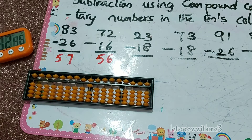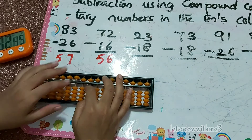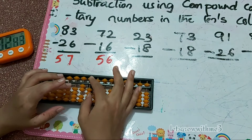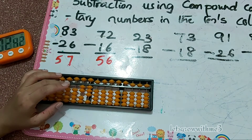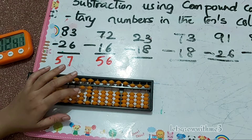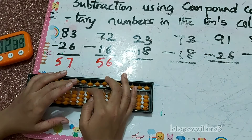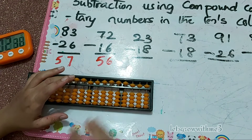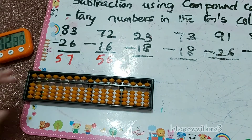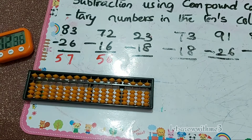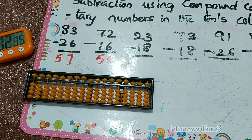Next: 23 minus 18. Minus 1 in the tens column, minus 8 in the ones column. Papa down, mama down, baby down. So the answer is 5.